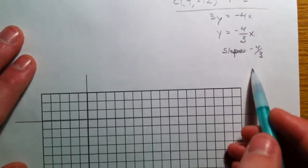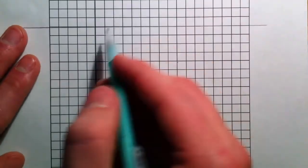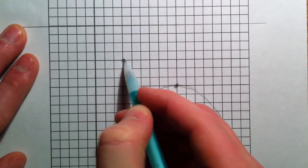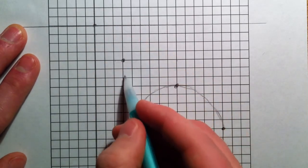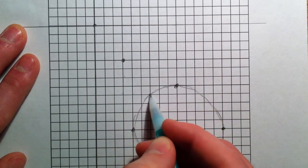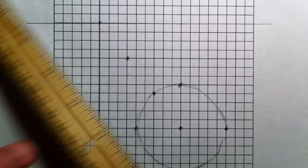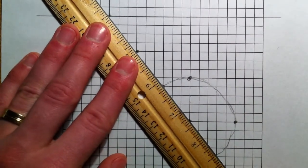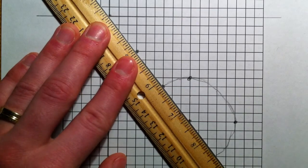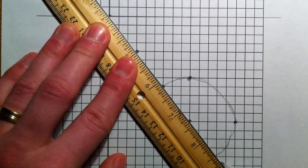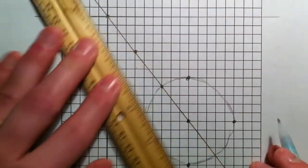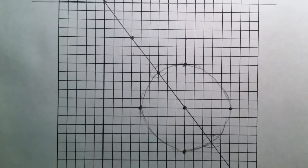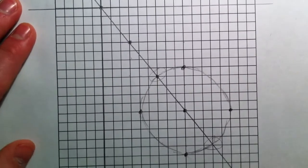Negative 4 thirds is our other slope. So, down 4 and over 1, 2, 3. Down 4, over 1, 2, 3. I may have gotten lucky there. We can tell where our intersection point is. So, it looks that we have two intersection points here and here. We're going to find those.